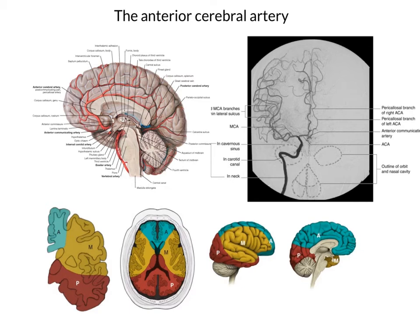Looking at the coloured diagrams below, we can see in green the distribution of the anterior cerebral artery close to the midline. It does supply the most anterior pole of the frontal lobe, but that's only one part of its distribution. It supplies this crest along the superior lateral surface of the hemisphere and dives down on the medial aspects of the hemispheres — that's its grey matter distribution.